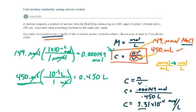You could also report this, the units as not just moles per liter, but you could also report the units as capital M, which would be molar. So you'd say you have a 3.31 times 10 to the minus 4 molar solution.